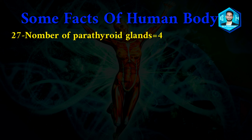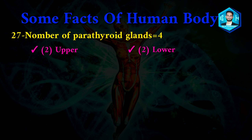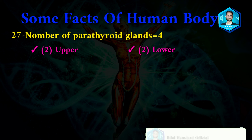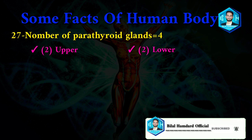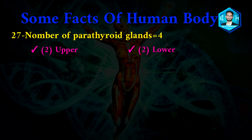Number twenty-seven: number of parathyroid glands is 4, which includes two upper and two lower parathyroid glands. In the human body, there are 4 parathyroid glands — 2 upper and 2 lower.